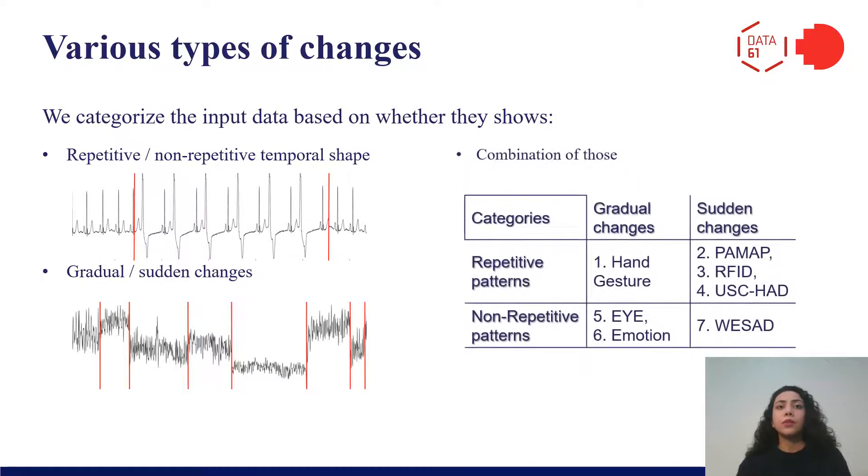However, input data can be any combination of these characteristics. According to these characteristics, we categorized the input data into four different types and chose seven multivariate datasets covering different types of categories. We showed that our method is applicable across different types of inputs.